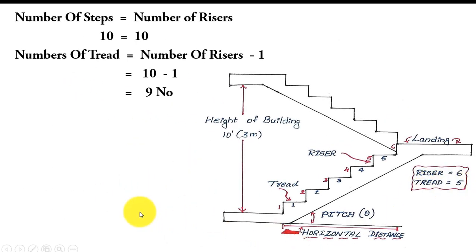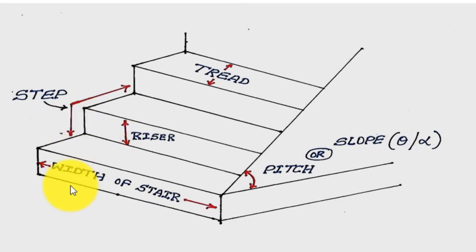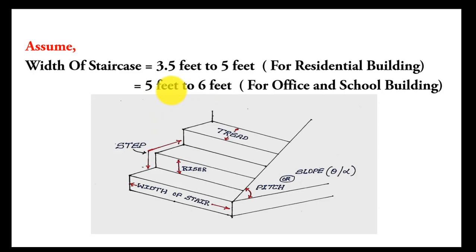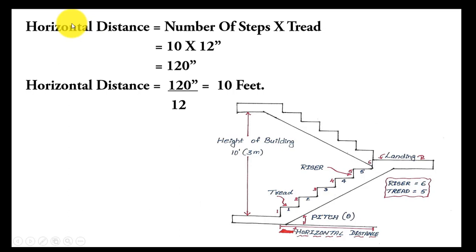Next, we assume the width of the stair. The width runs from one side to the other. For a residential building, the width is assumed as 3.5 feet to 5 feet. For an office building or school building, we assume 5 feet to 6 feet, because access is much greater there compared to a residential building.